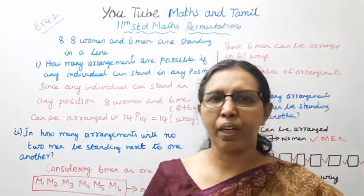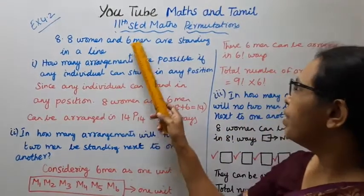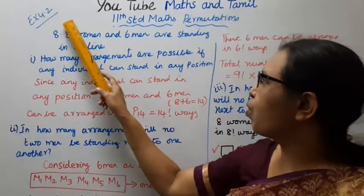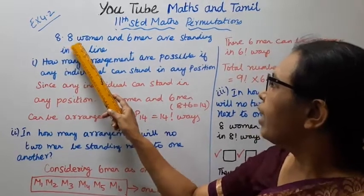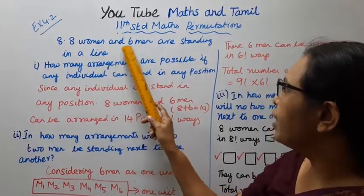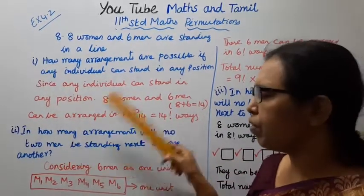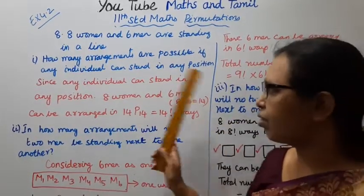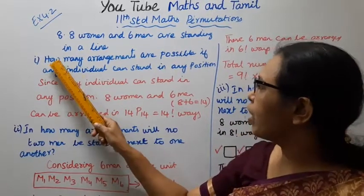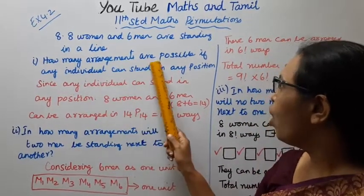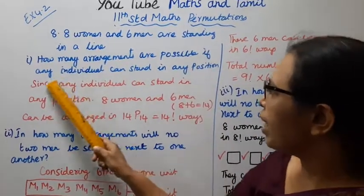Hello students, welcome to Maths and Tamil channel. 11th standard Maths Permutations, Exercise 4.28. Problem: 8 women and 6 men are standing in a line. First, three subdivisions. How many arrangements are possible if any individual...